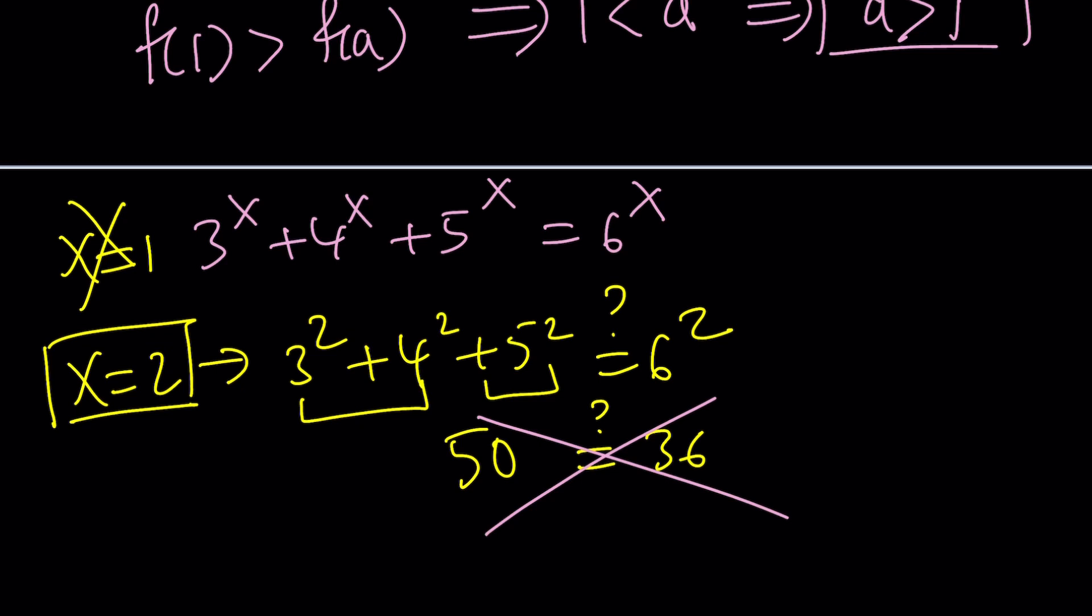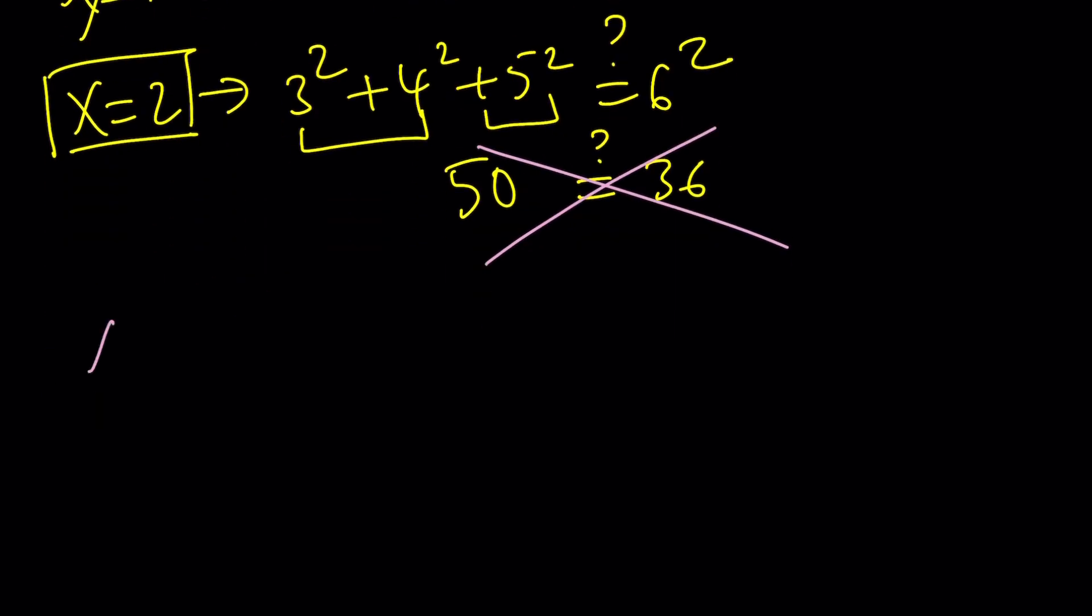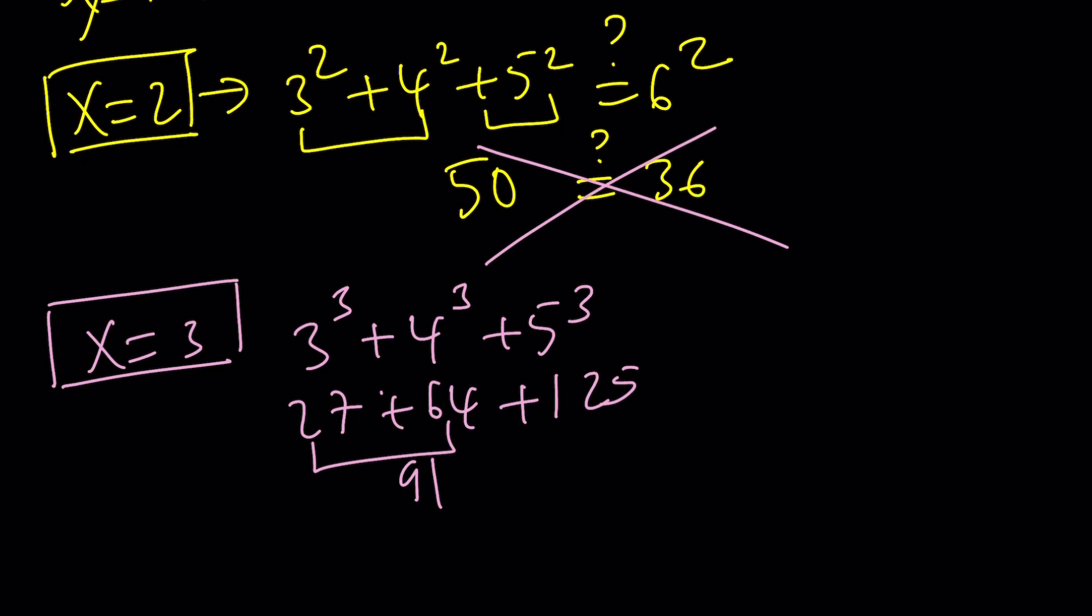But guess what? At x equals 1, we get 12. At x equals 2, we get 36 or 50. So we're getting closer. So do you think x equals 3 is going to work? You can give it a try. If x is equal to 3, then you're going to get 3 to the third, 4 to the third, and 5 to the third. Let's find out what it is. This is 27, this is 64, this is 125, this is 91. 91 plus 125 is 216, which happens to be 6 to the third power.